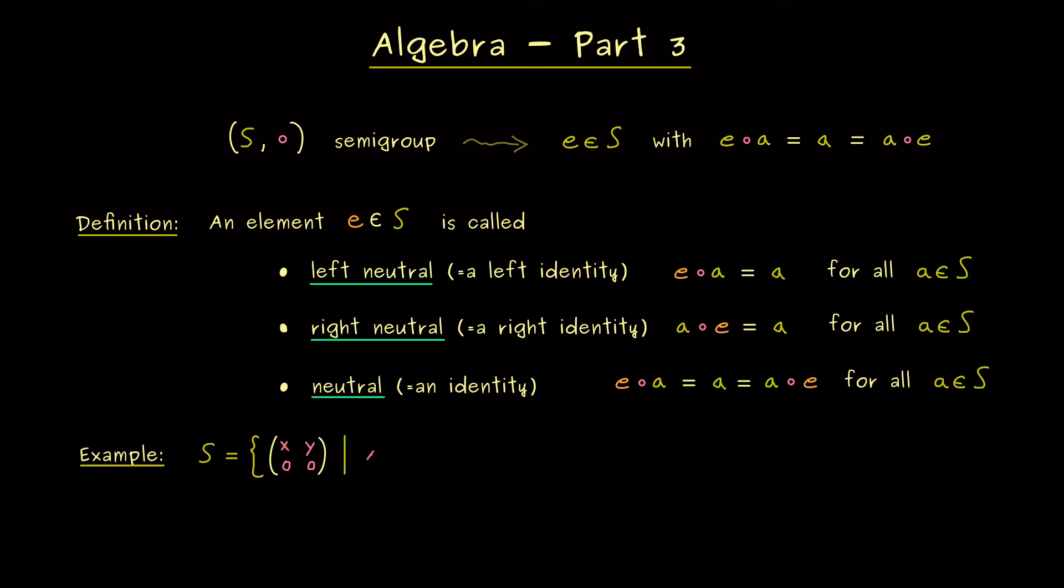In order to see that let's take an example consisting of matrices. And here I want 2 times 2 matrices where only the first row has non-vanishing entries. So we have this form here and x and y come from R. And as the binary operation we just take the matrix multiplication.